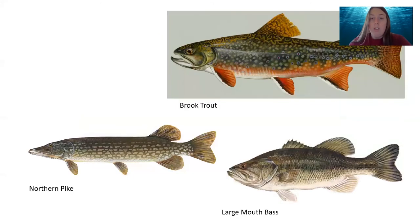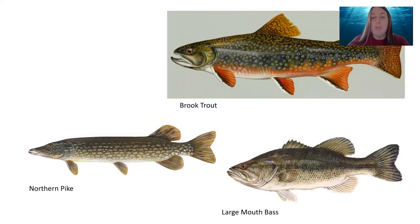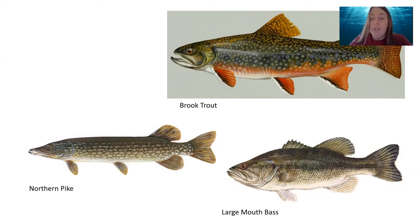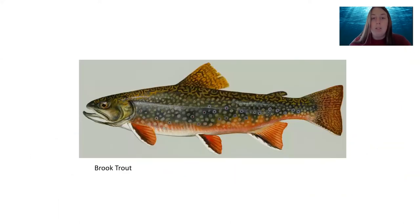For our final identification question, we have the brook trout up above, the northern pike in the lower left, and the largemouth bass in the lower right. Which one of these fish has very distinct, bright spots along the lateral line? This one's a little tough because all three fish have a distinctive lateral line, but which one has really bright spots? That would be the brook trout — it's one of the brightest fish in our waterways, with very distinct spots going down the side that are red with a blue outline.